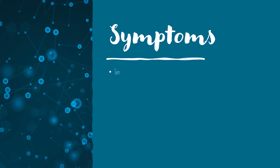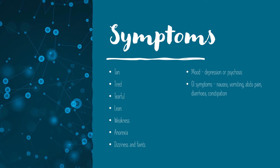The way I like to remember the symptoms of adrenal insufficiency is tan, tired, and tearful. They may also be lean, have a lot of weakness as well, anorexia, or prone to dizziness and fainting. In some patients they may have mood-related symptoms such as depression or psychosis — so again, think about whether an early presentation for a psychiatric illness may actually be organic. These patients may have GI-related symptoms, pigmented palmar creases, postural hypotension, vitiligo, and they may actually go into shock.